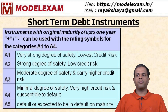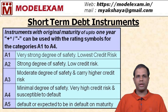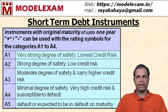Credit rating symbols for short-term debt instruments. Instruments with original maturity of up to one year are generally called short-term debt instruments. Here also, plus or minus symbols — known as modifiers — can be used to differentiate credit ratings within a particular category.